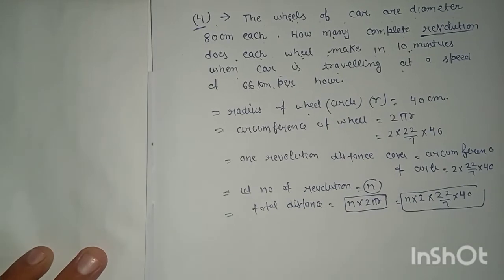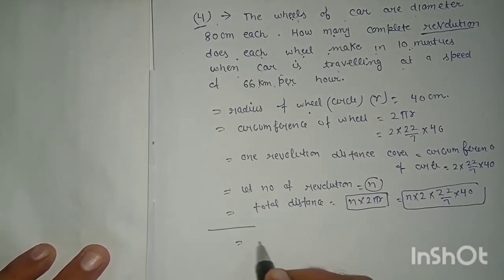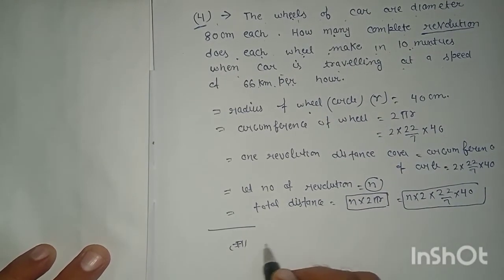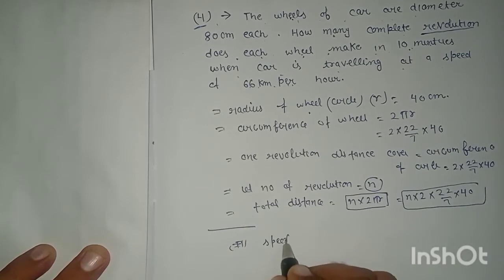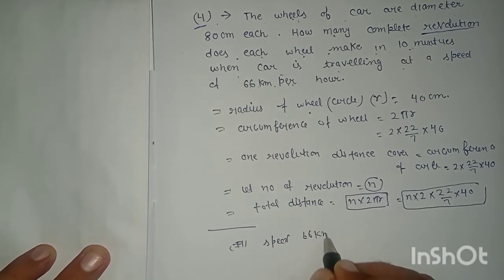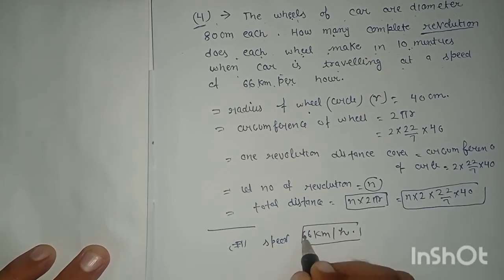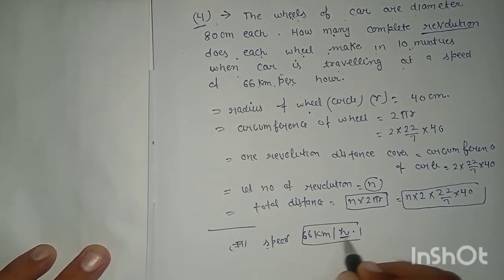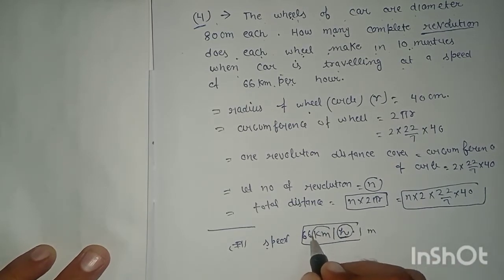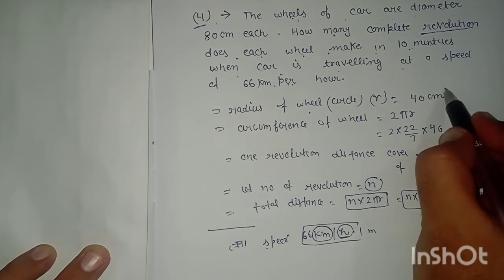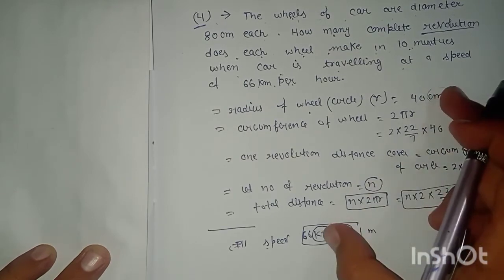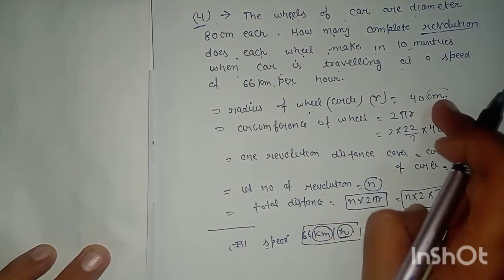The speed is 66 km per hour. We need to change the units to match - converting to meters and then centimeters, so the units are the same.